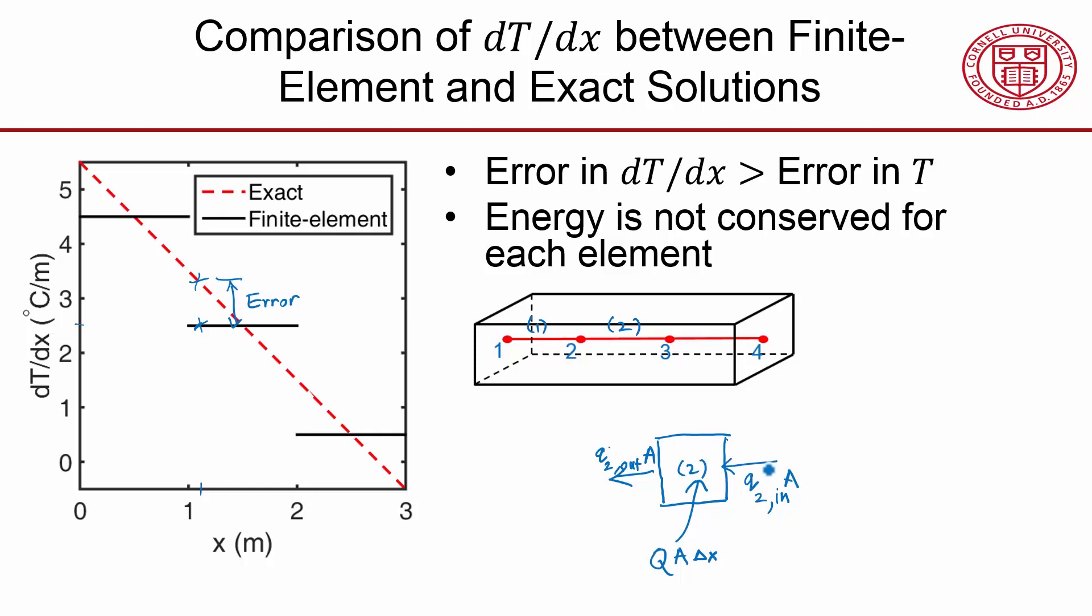If energy were conserved, the heat flow going in plus the heat generated would be equal to the heat going out. But this is saying that the heat flow going in, or the heat flux going in, is equal to the heat flow going out, which means that this is equal to this, and it's not accounting for the heat being generated in the element. So what happens to this heat being generated in the element?